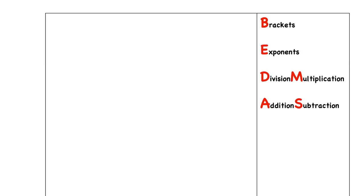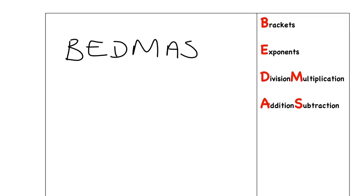When you were younger, you used BODMAS. Now that we are fully aware of exponents, we use BEDMAS. BEDMAS tells us: first look at the brackets, then look at the exponents, then do division and multiplication — those are at the same level, it doesn't matter which order you do those two in. And addition and subtraction are the very last things that we do.